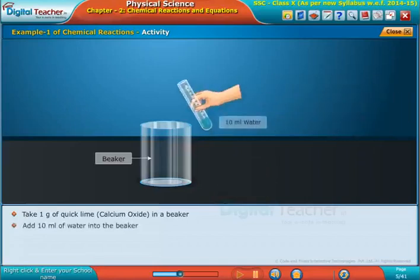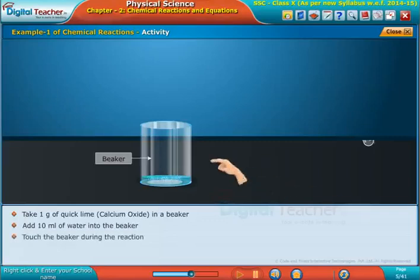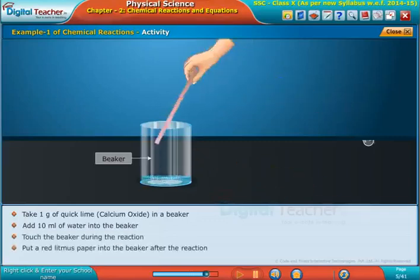Add 10 ml of water into the beaker. Touch the beaker during the reaction. Put a red litmus paper into the beaker after the reaction.